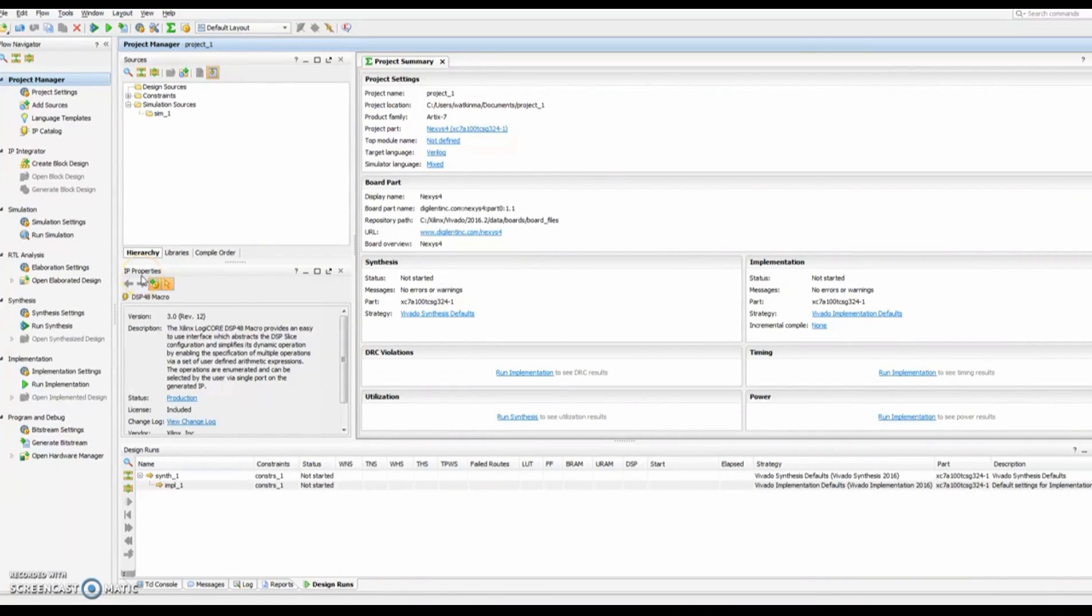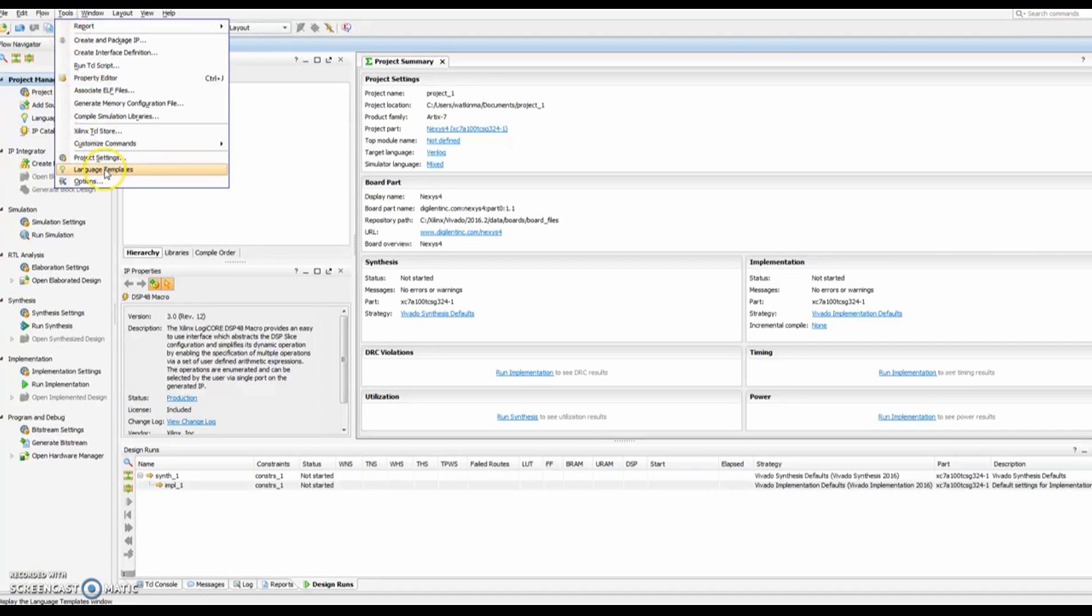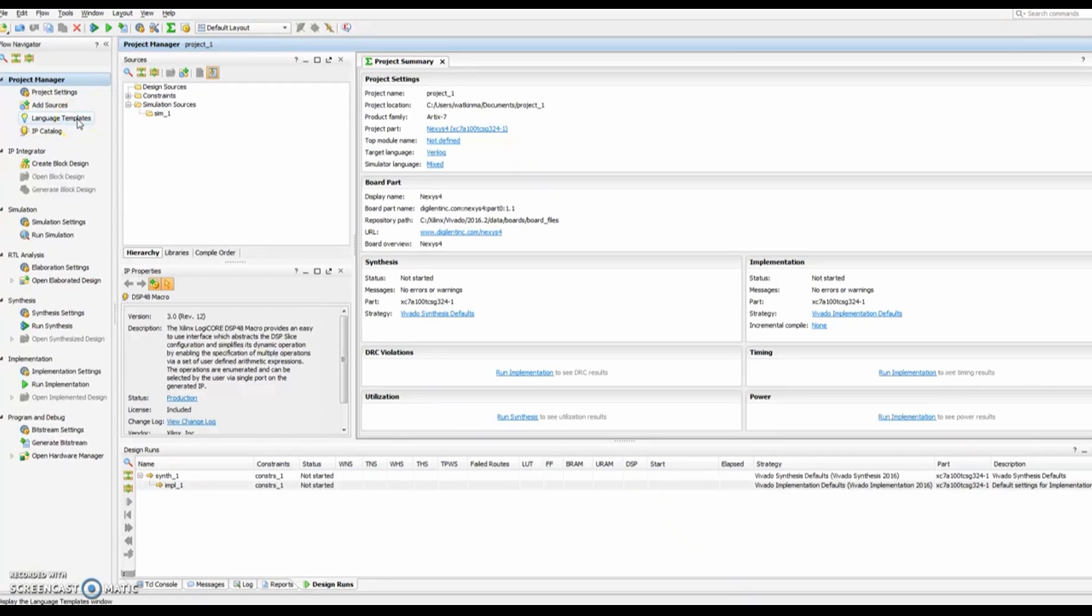Here we will look at where you can find information to instantiate the multipliers and DSPs via some of the various methods we discussed. Two of the methods, the information can be found in the language template section. You can find that either in the tools and language templates option or you can also find it over here in the left of the toolbar on language templates.